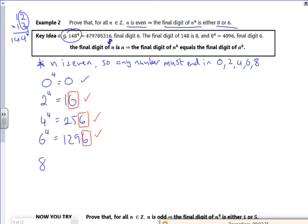Then I've got eight to the power four is 4096. So I've got six there at the end. So I think I've done exhaustion with this. I've tried all the possible combinations, but I had to have the idea that I knew that the end number comes from the end number times together.